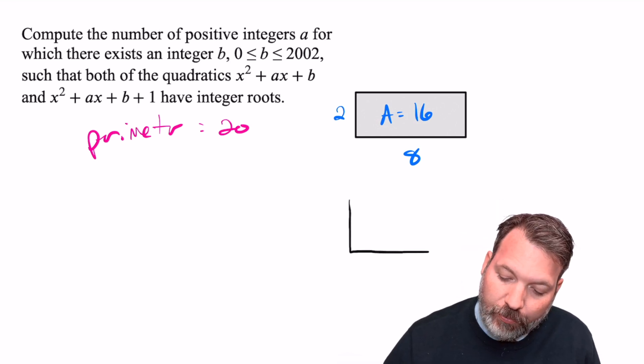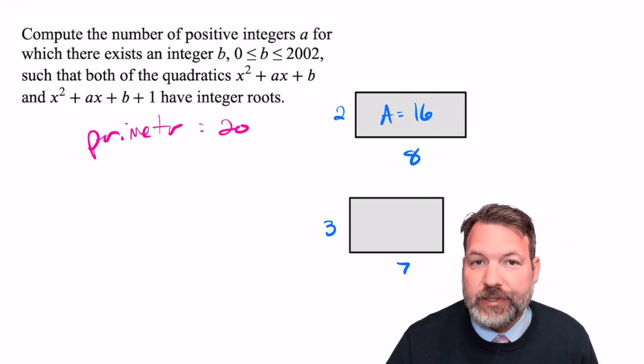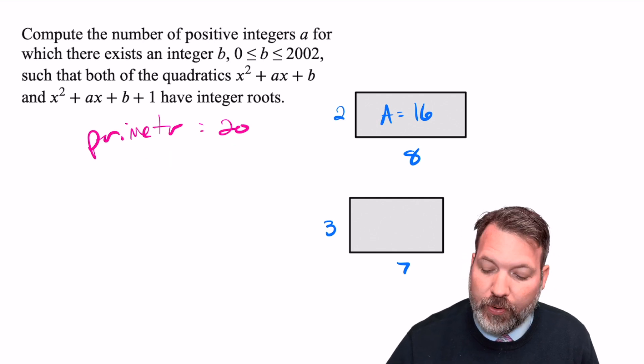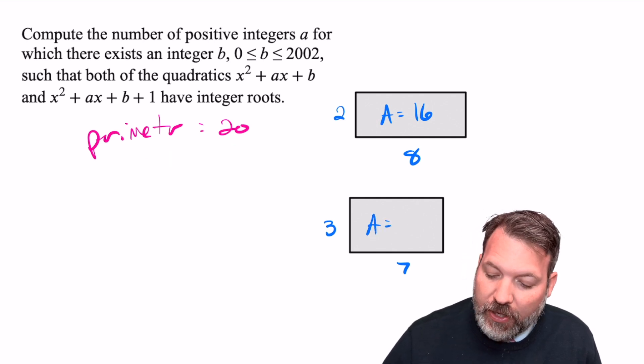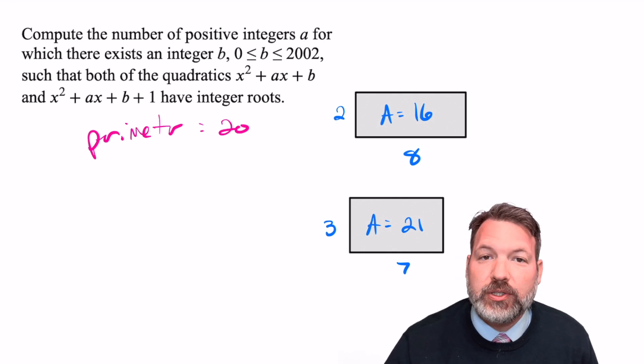But then you think to yourself, well, what if we made it a little bit taller, but a little bit less wide? That is, for example, let's make it a three by seven rectangle instead. This would still have the proper perimeter, still have a perimeter of 20, but its area would actually increase quite a bit from 16 to 21. Three times seven makes 21.